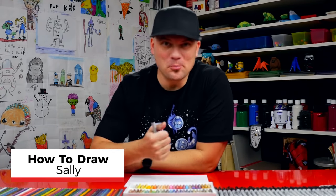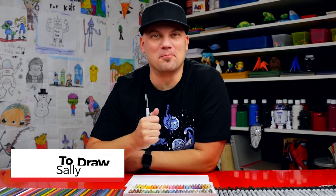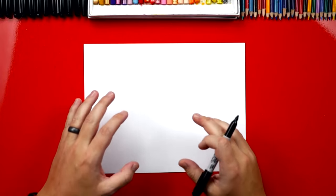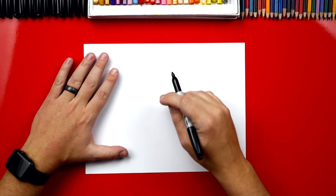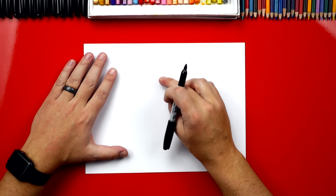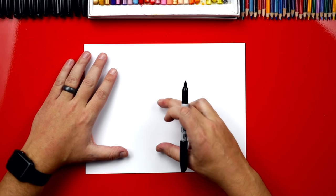Hey art friends, in this lesson we're gonna draw Sally from Nightmare Before Christmas. I hope you're excited. You're gonna follow along with me. You got a marker and some paper. We're gonna first start by drawing Sally's head in the middle of our paper, but towards the top so that we have room for her body below.